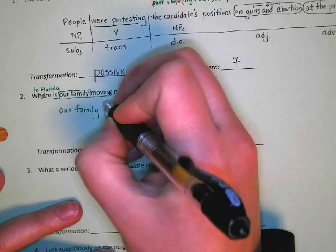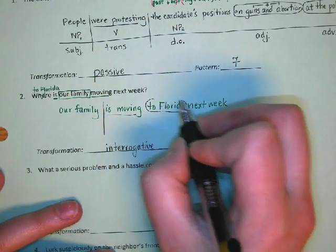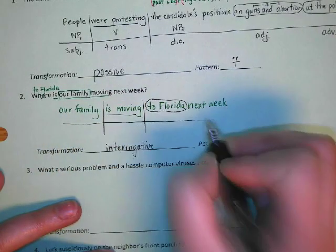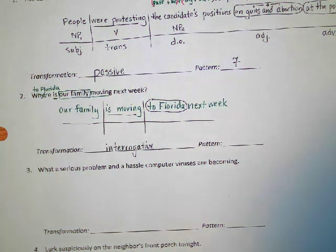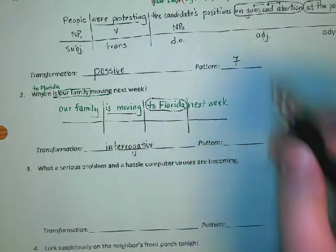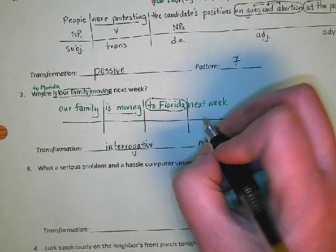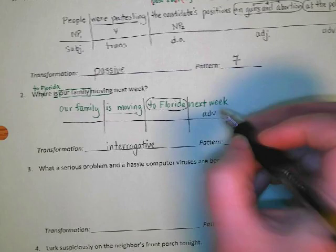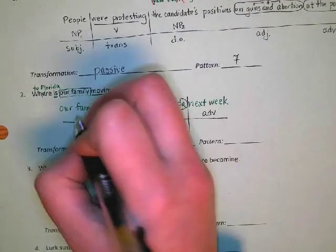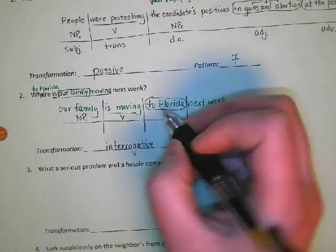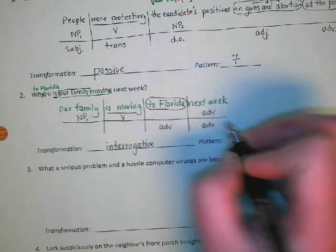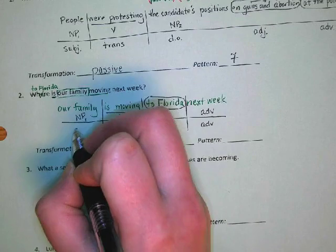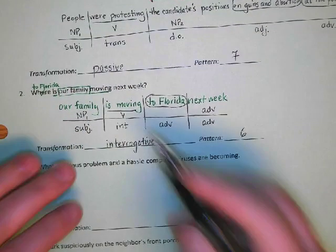Now we chart this one out. 'Is moving' is our verb. 'To Florida' is a prepositional phrase. 'Next week' is not a prepositional phrase — watch out for those two-word adverbs. 'Next to' is a prepositional phrase, but 'next' alone is not. From the first grammar unit, 'next week' is one of those time adverbs that's more than one word, but you chart it as a single adverb. Our family is noun phrase one. 'To Florida' is where — an adverbial prepositional phrase. With only adverbs after our verb, we know it's intransitive. Our family is the subject, so all intransitive verbs are pattern six.